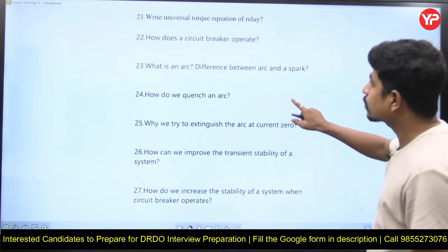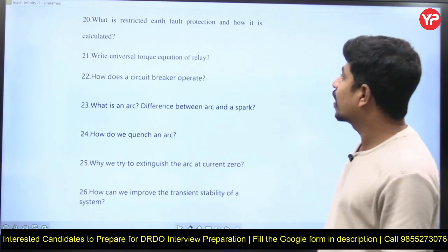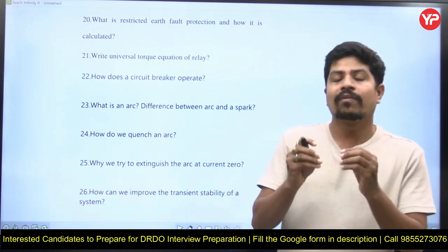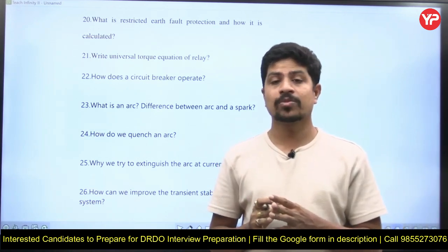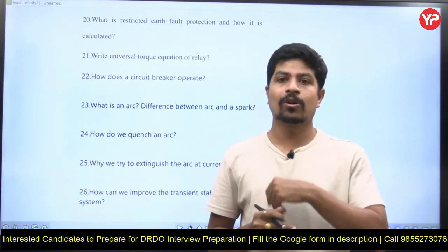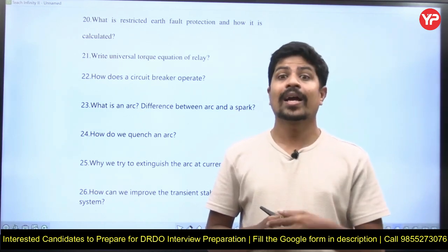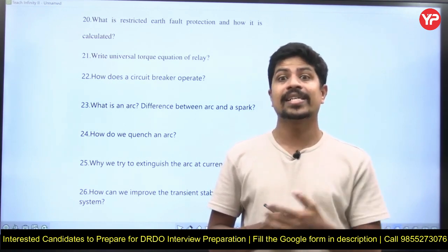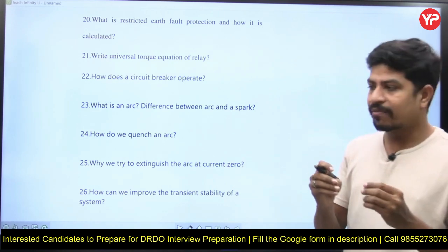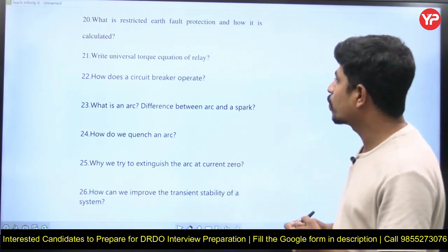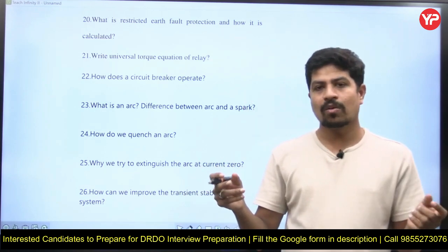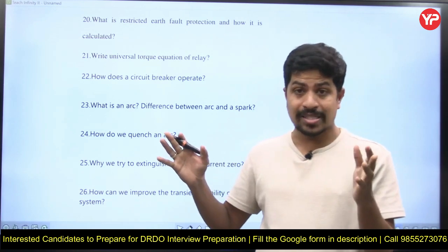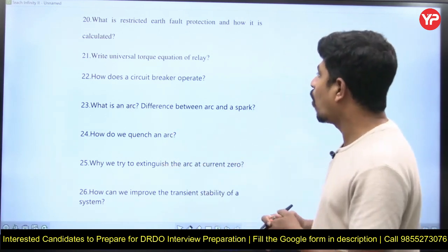What is restricted earth fault protection and how is it calculated? You must be very good at power system protection — especially differential protection, earth fault protection, restricted earth fault protection, current transformer operation, PSM (plug setting multiplier), TMS (time multiplier setting), and current setting. You must have a thorough understanding of these topics. Next: what is the universal torque equation of a relay? There is an equation called the universal torque equation from which you can derive the torque equation for any type of relay.